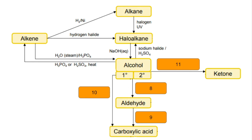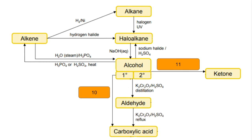Number 8: primary alcohol to aldehyde — use acidified potassium dichromate with distillation to ensure you get the aldehyde. Number 9: aldehyde to carboxylic acid — use the same oxidising agent and heat it. Reflux is the best method as it ensures all of the aldehyde gets reacted.